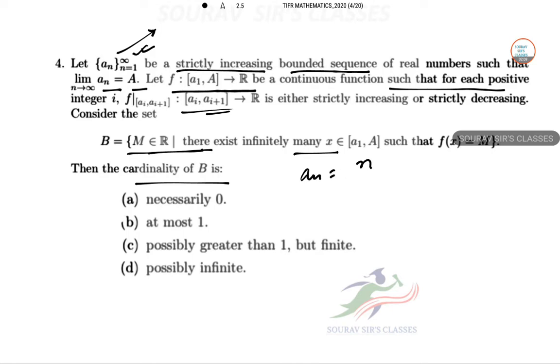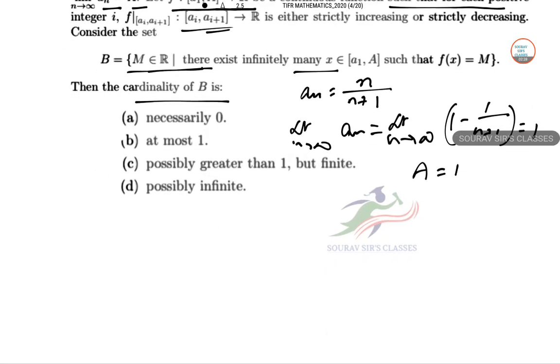Let us take a n equal to n by n plus 1. So limit n tends to infinity a n will be limit n tends to infinity n plus 1 minus 1 by n. So 1 minus 1 by n plus 1 that is equal to 1. So hence a equal to 1 in this example case.